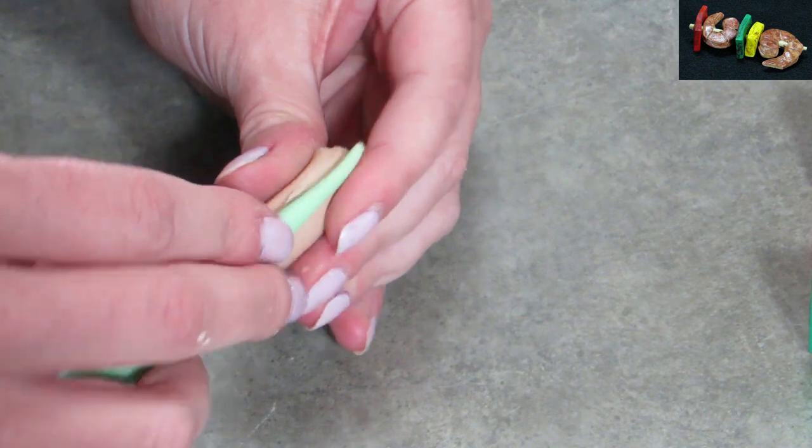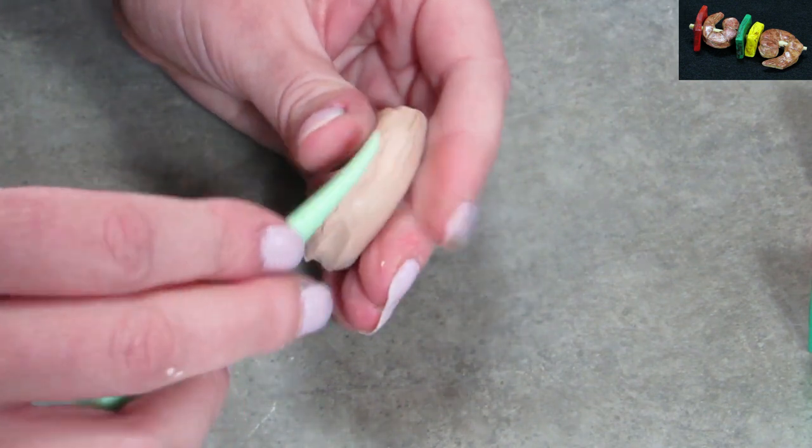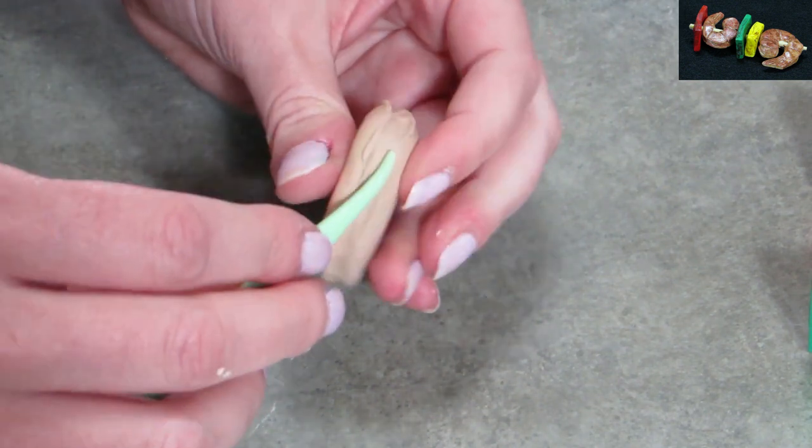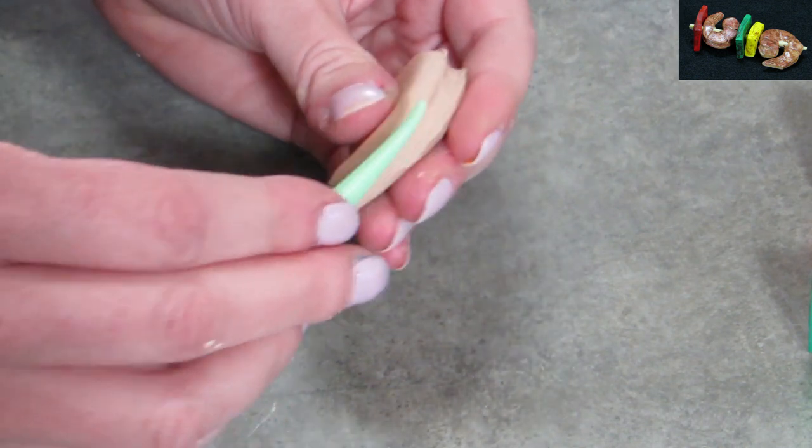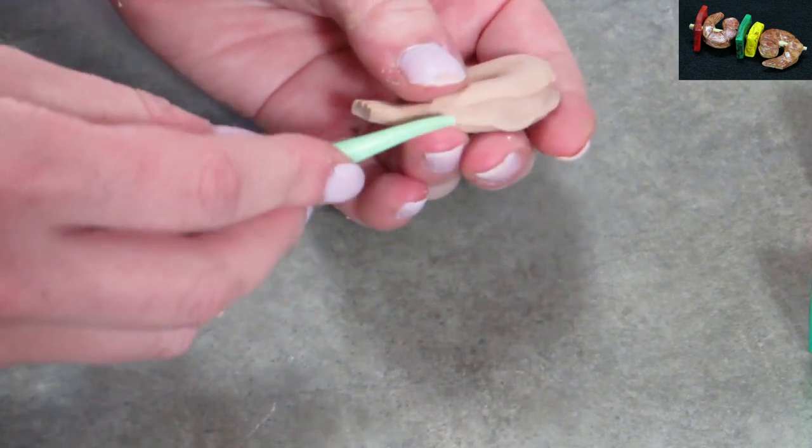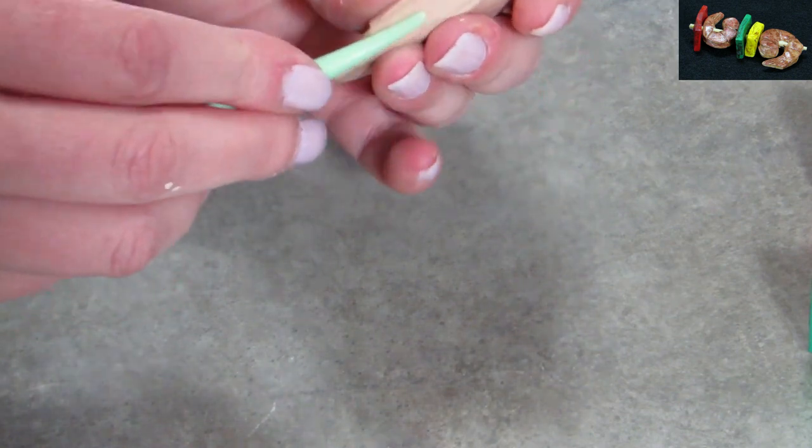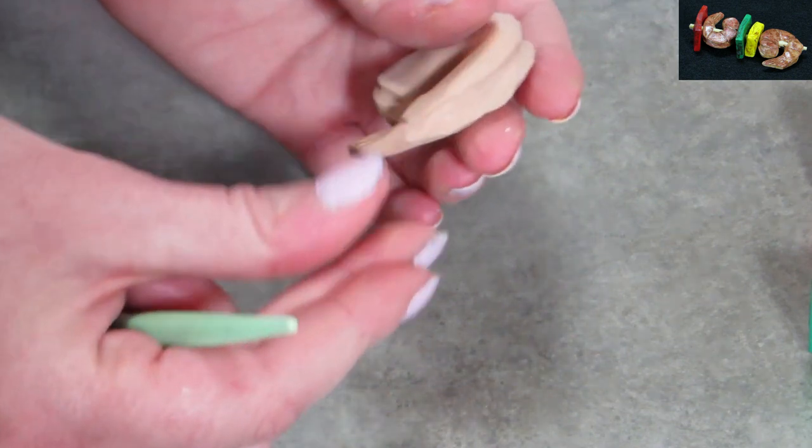Then I'm going back into it with my tool again, kind of pressing it out, because you know how the flesh always is a little, I don't know, ripply. It's not a nice clean cut when you devein your shrimp. So that's what I'm going for there, and I think I'm pretty much nailing it.